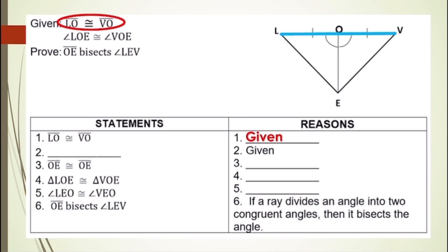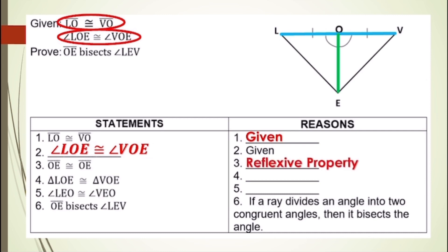For number two, the statement with reason given is: angle LOE is congruent to angle VOE. And for our third statement, we have line segment OE is congruent to line segment OE. The reason is by reflexive property.